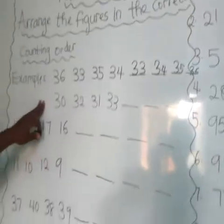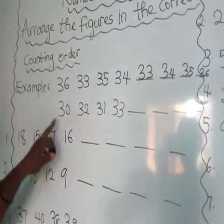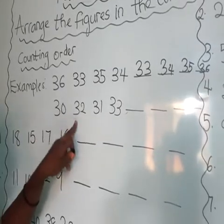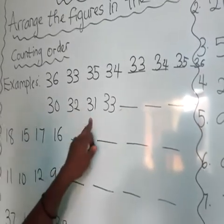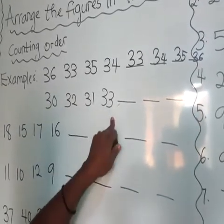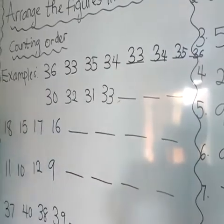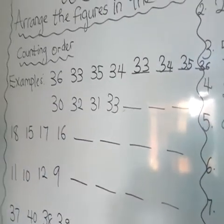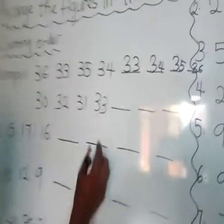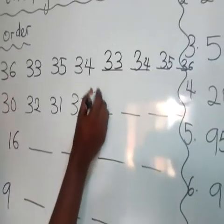Let's go to the second example. We have 30, 32, 31, and 30. Which number comes first? We have 30 as the first number.